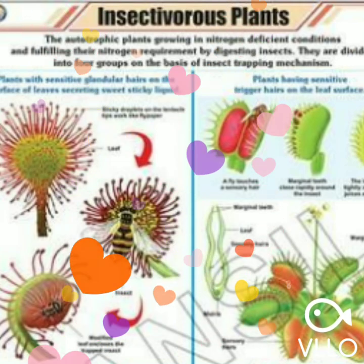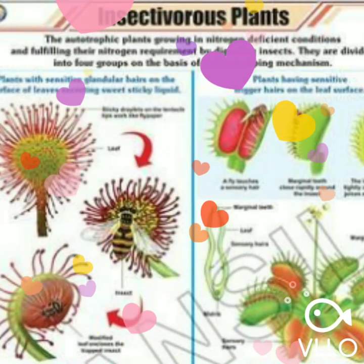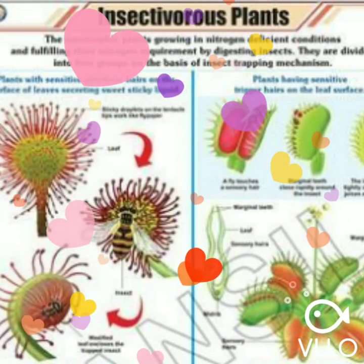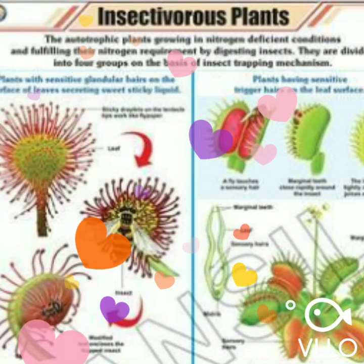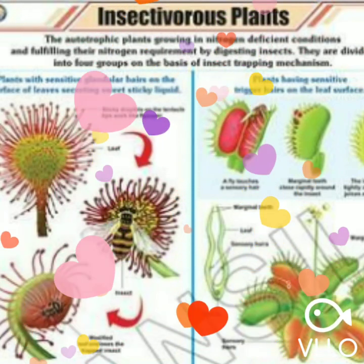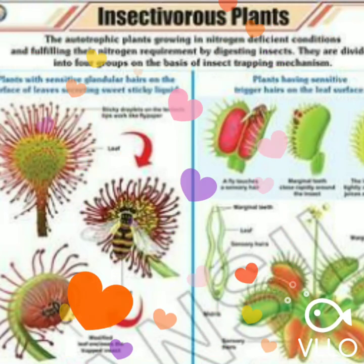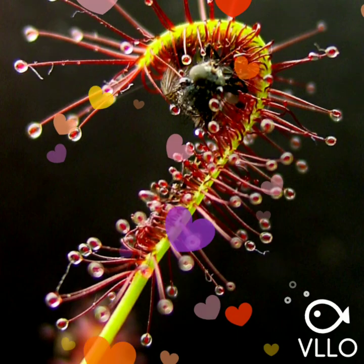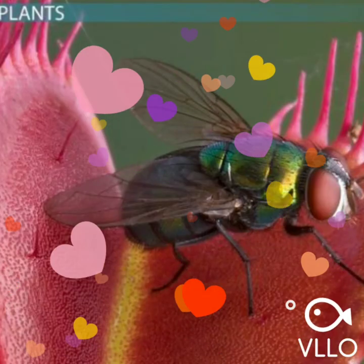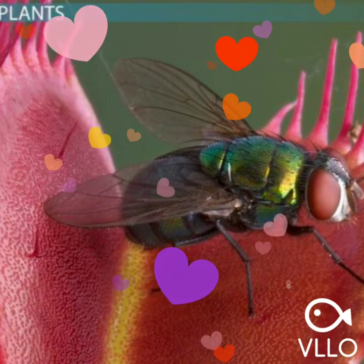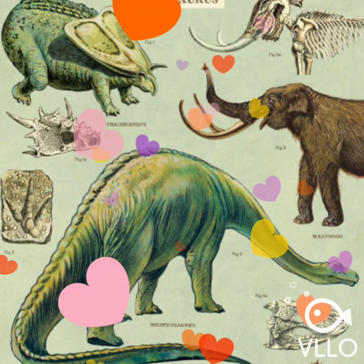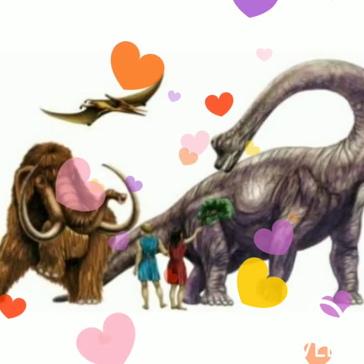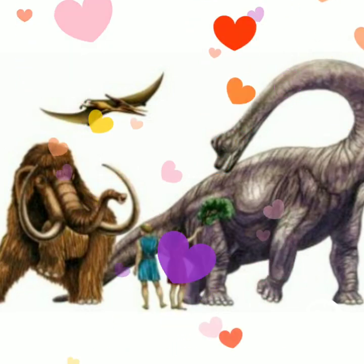We also find modification in insect-eating plants, called insectivorous plants. These plants get carbohydrates from photosynthesis but get proteins by catching and digesting insects, absorbing nitrogen. For example, the Drosera traps and digests insects, and the Dionaea (Venus flytrap) snaps shut to catch insects.